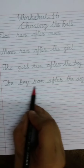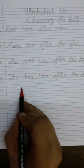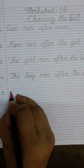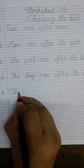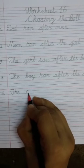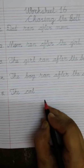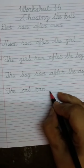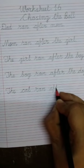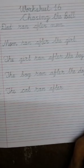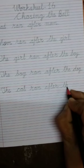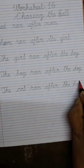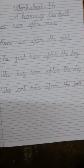The boy ran after the dog. Again, leave one line and write number 5. Number 5: The. T – H – E. The. Cat. C – A – T. Cat. Ran. R – A – N. Ran. After. A – F – T – E – R. After. The. T – H – E. The. Ball. B – A – double L. Ball. Full stop.